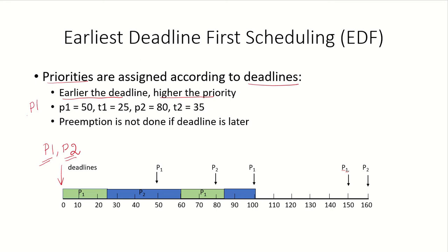For process P1, the period is 50. A period of 50 means it will arrive in the system at an interval of 50 time units — at time 0, then at 50, then at 100, then at 150. Its CPU burst time is 25, meaning whenever it is scheduled, it will require the CPU for 25 time units.